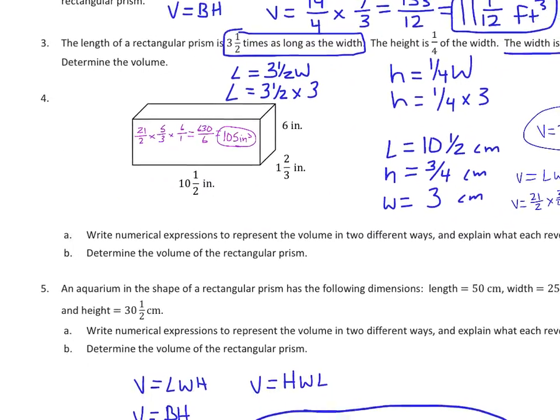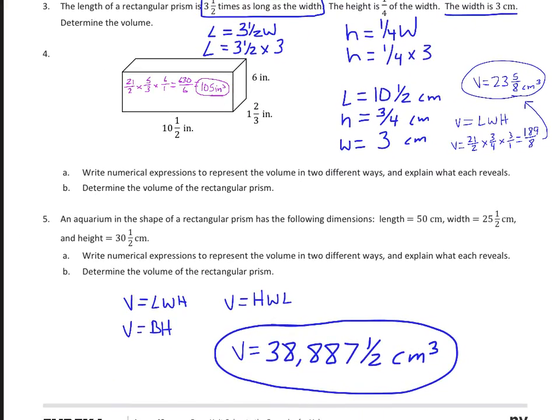For number four and number five, I'm going to blow through these because showing it in multiple ways is saying that we can do base times height, we can do length times width times height, we can do height times width times length. For this one, I just did length times width times height. I could have done this times this first and called that the base and then multiplied the sixth. It really doesn't matter as long as you end up with 105 cubic inches. Same thing over here. I just multiplied length times width times height, but I could have done any order I want and I will end up with the same answer.